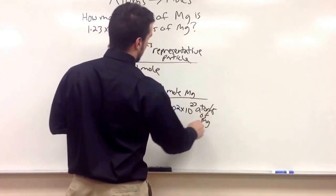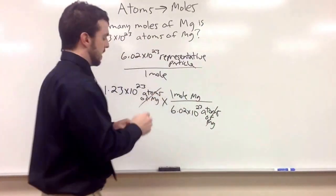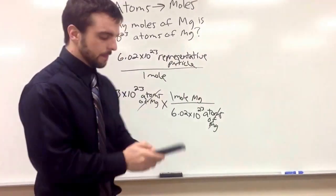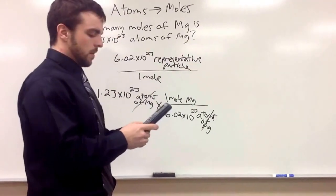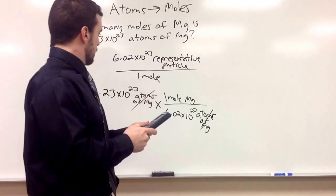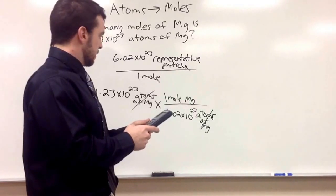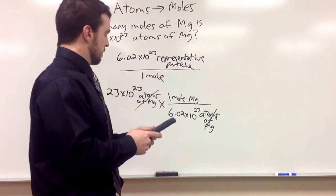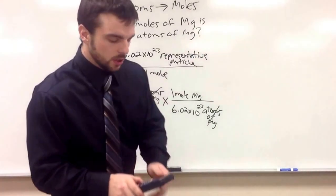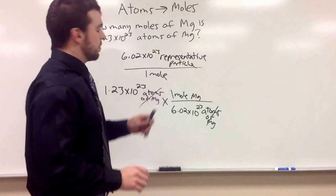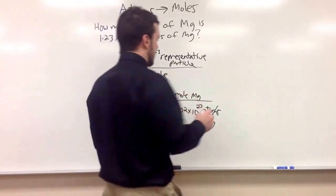And look, our atoms of magnesium cancel out, so that's gone. And now we're left with moles of magnesium. So let's see what we get for the answer. 1.23 times 10 to the 23rd, divided by 6.02 times 10 to the 23rd. I got 0.204. Let's check our sig figs. Yep, three sig figs, so 0.204. That's the answer.